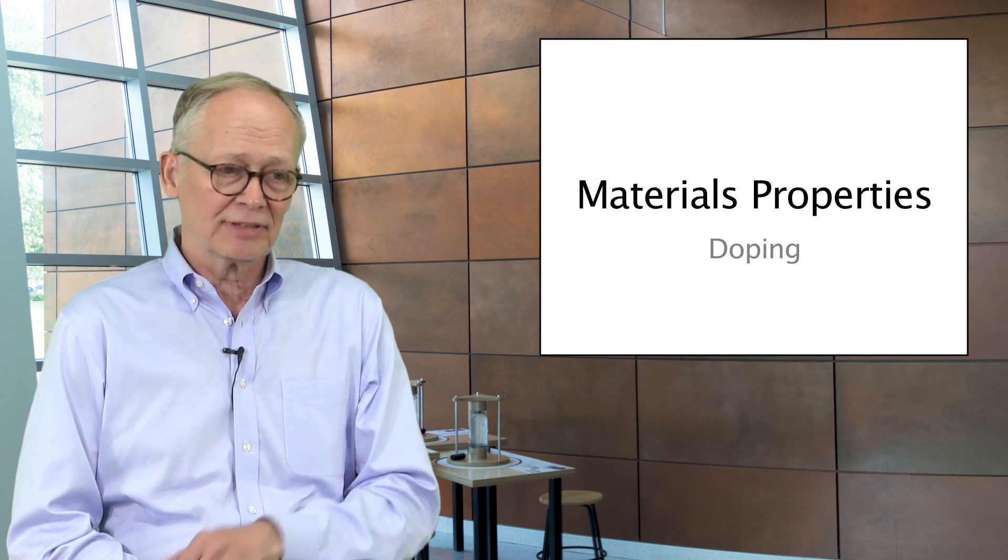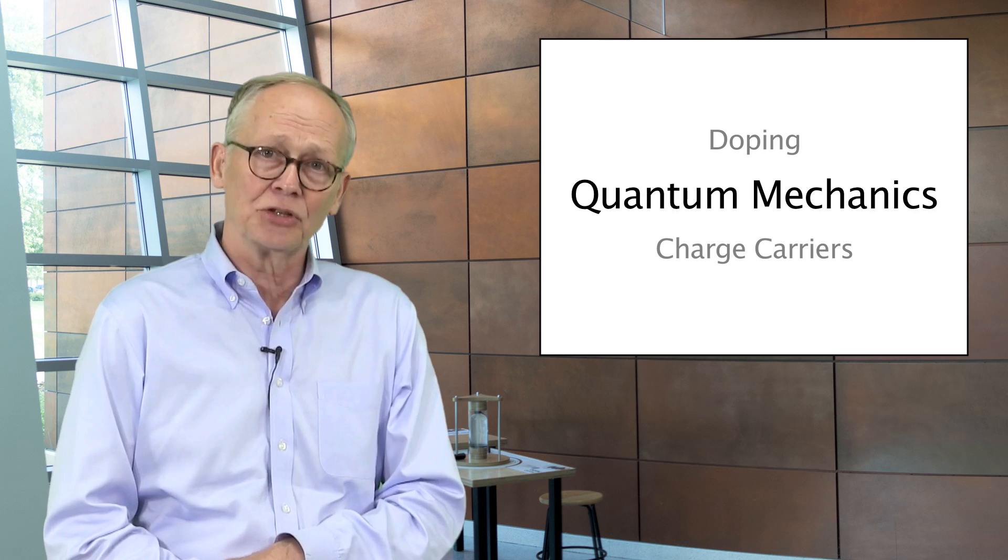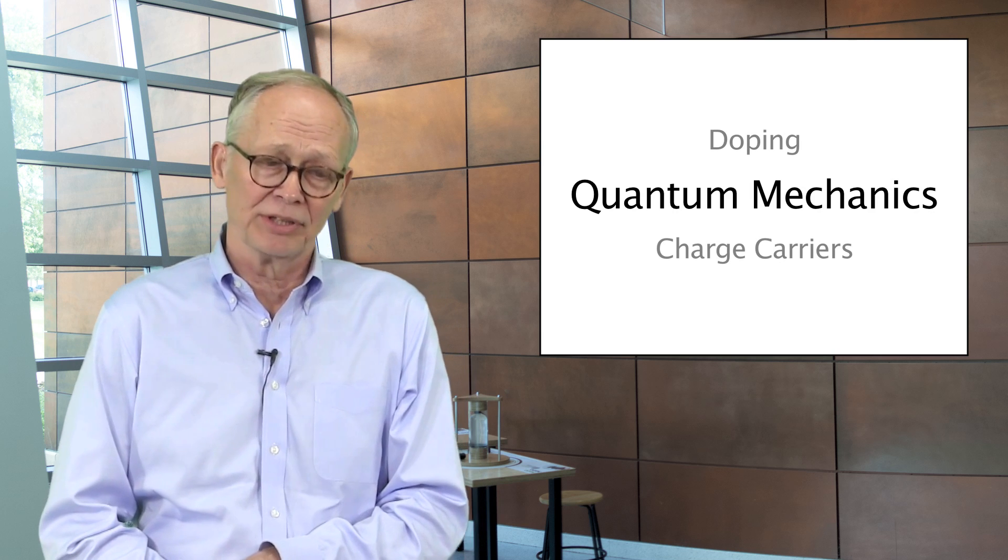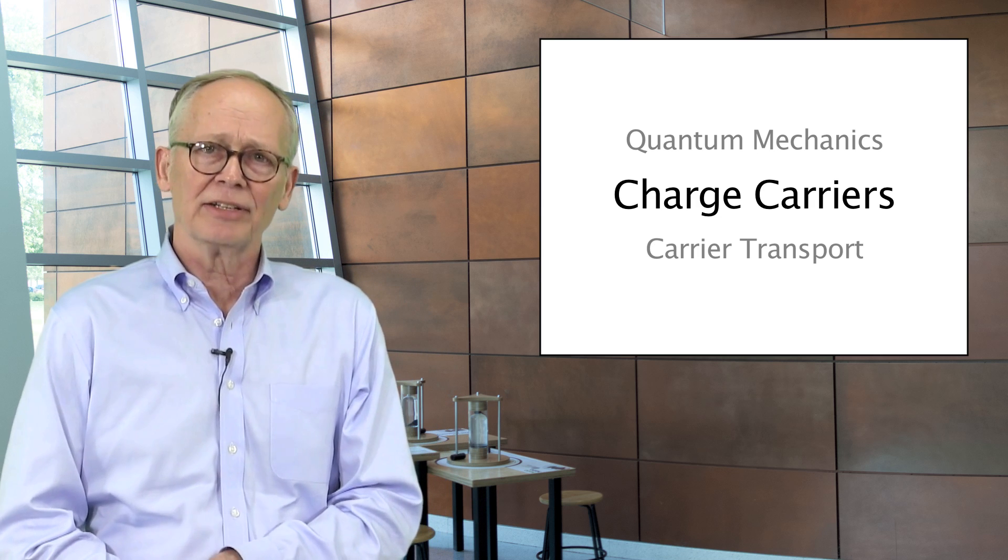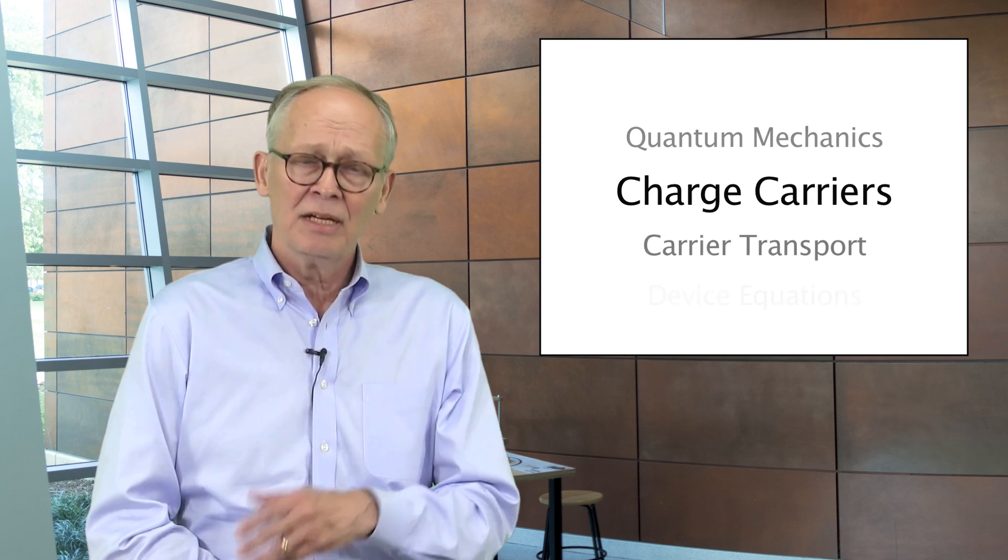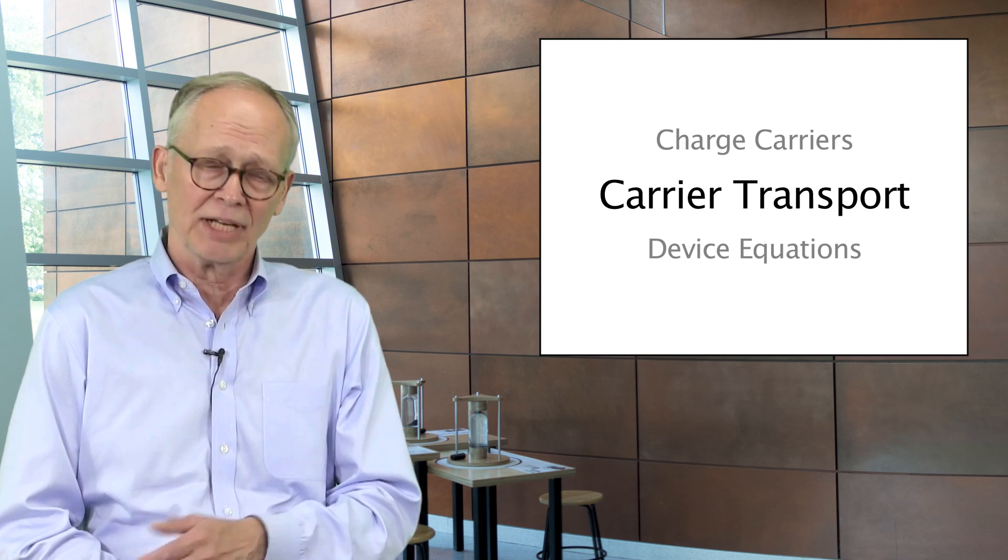The course consists of five units. The first is on material properties and this concept of doping. The second is an introduction to quantum mechanics, which becomes important in devices. The third is how we calculate the concentrations of positive and negative charge carriers that make devices possible. The fourth is about how those charge carriers move, how they're generated, and how they recombine.